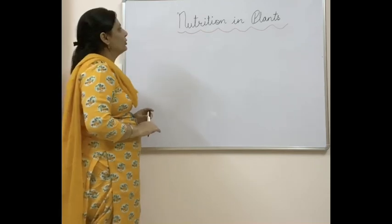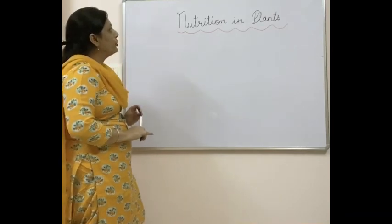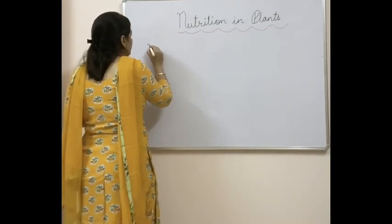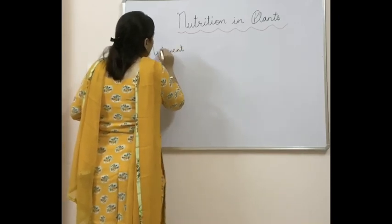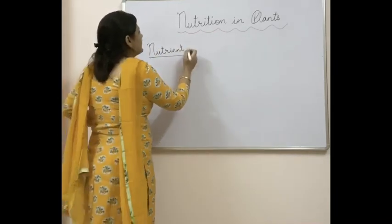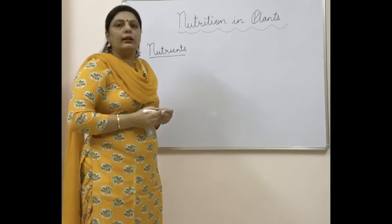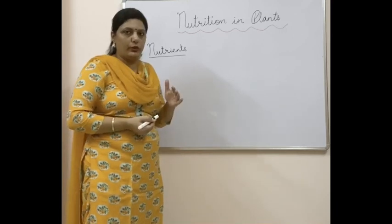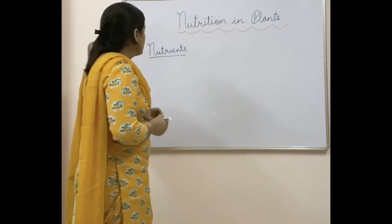The topic of today's chapter is 'Nutrition in Plants.' First, you should know what nutrition means, but before nutrition there comes a term which is 'nutrient.' In your sixth class, you have already read about components of food. Nutrients are the components of food which a living organism takes from its surrounding and utilizes for energy, for carrying out different life processes, as well as for growth and repair of its body parts.